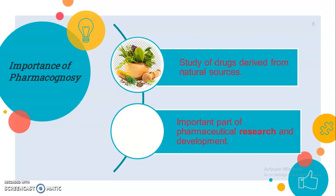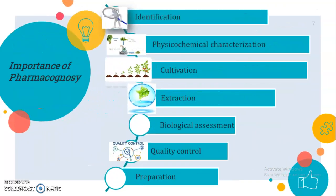The importance of pharmacognosy: through the study of this branch, we can study different crude drugs derived from natural sources. It is an important branch of science, very useful in pharmaceutical research and development. It provides tools for identification of different crude drugs and a platform for physical and chemical characterization. We can cultivate different drugs according to their therapeutic uses, extract phyto-constituents, and it is useful in biological assessment, quality control, and market preparation.